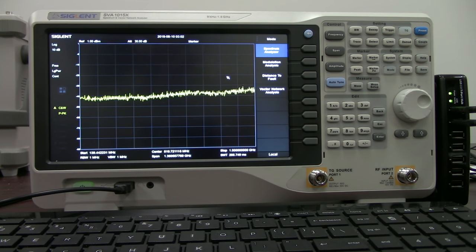The instrument does have 1 Hz resolution bandwidth. The DANL is right around minus 156. It's got the same marker and marker functions in the swept super heterodyne or spectrum analysis mode as the SSA3000X. It also has marker tables as well as peak tables.